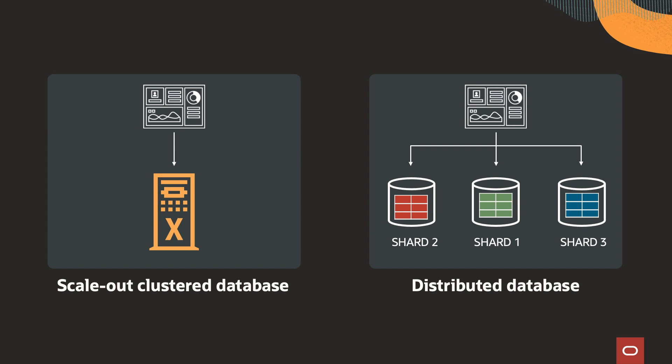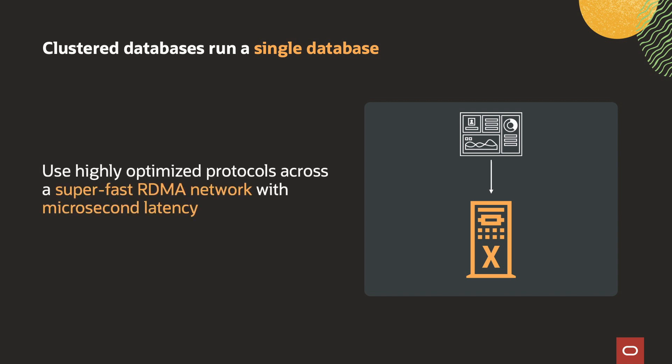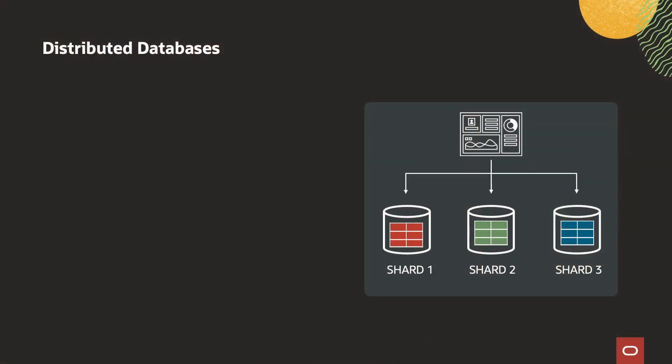So what's the difference between a scale-out cluster database and a distributed database? Both architectures scale out database processing across multiple computers. Cluster databases like Oracle RAC on Exadata run a single physical database, using highly optimized protocols across super-fast RDMA networks with microsecond latencies. In a cluster database like Exadata, any data can be directly accessed from any server, and frequently accessed data is cached locally to reduce latency and increase throughput. Cluster databases are architected for full functionality, highest performance, lowest latency, and application-transparent failover and maintenance.